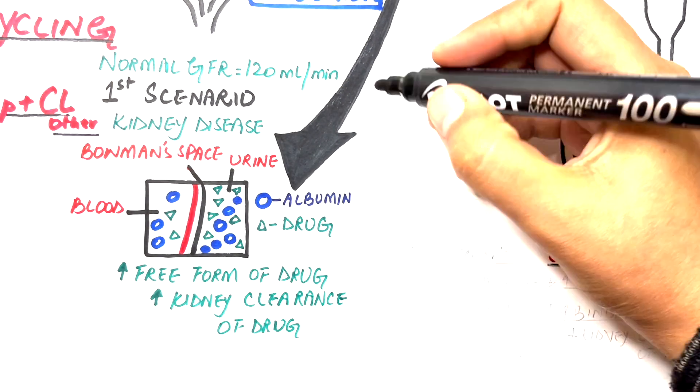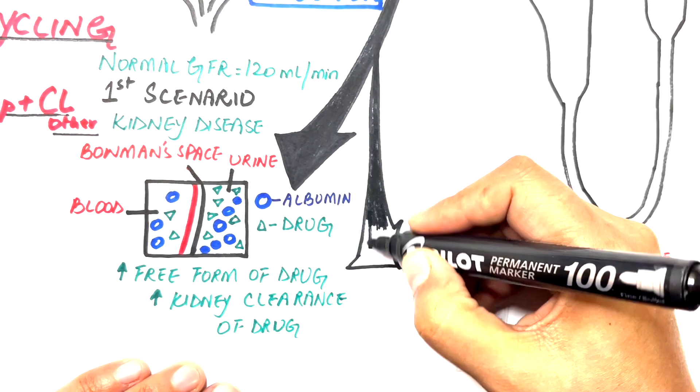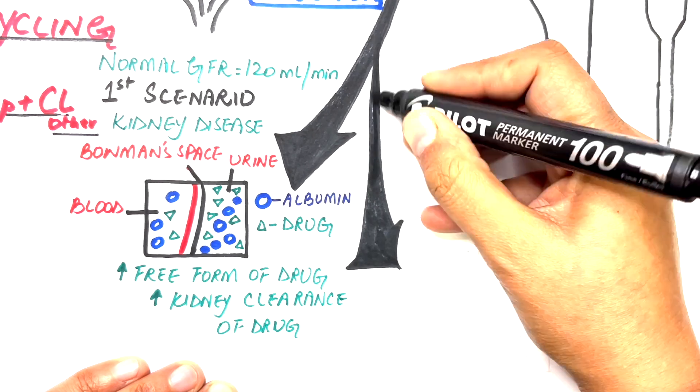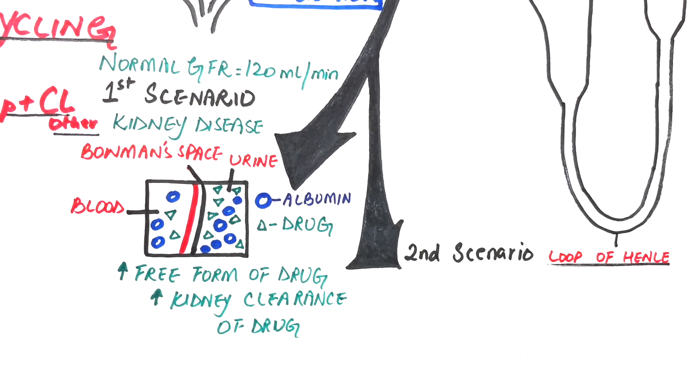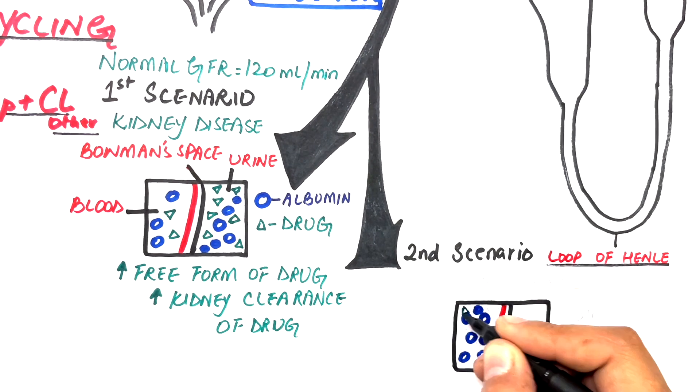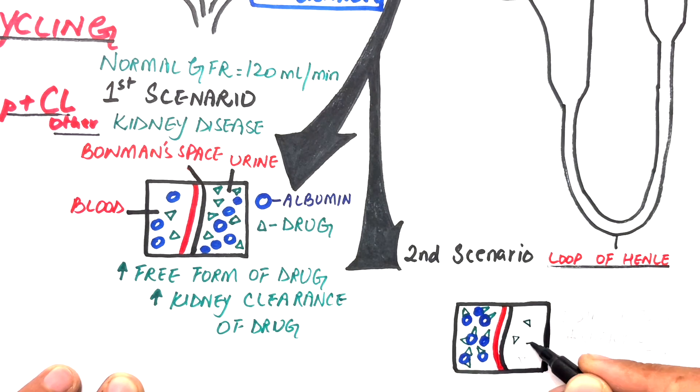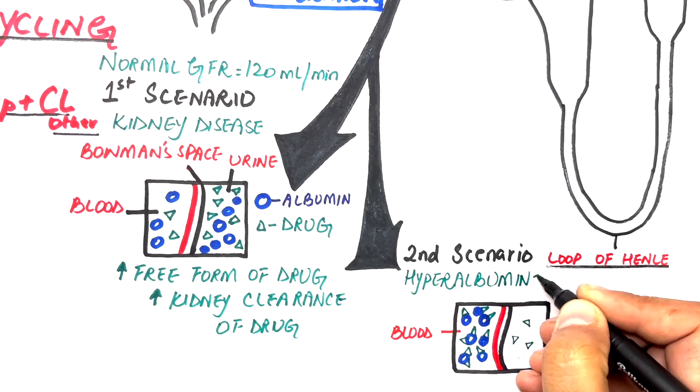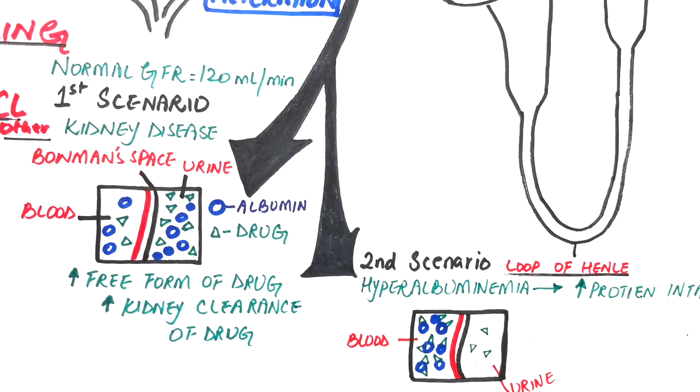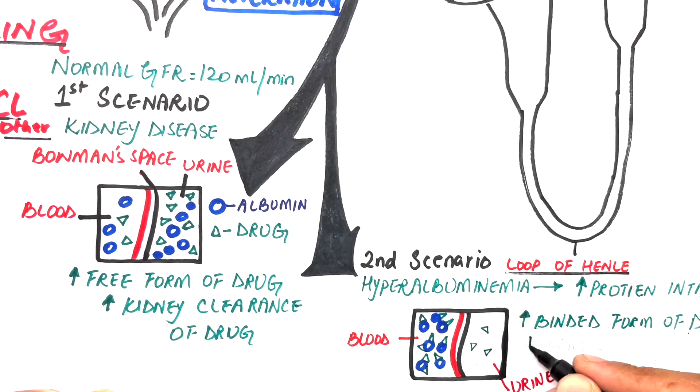In the second scenario, suppose we have a case where instead of hypoalbuminemia, someone has hyperalbuminemia, which may be the result of a high protein intake. The amount of bound form of the drug increases simultaneously, and as long as the drug is in its bound form, it won't be able to filter through the Bowman space. Hence, clearance of the drug through the kidneys will be decreased.